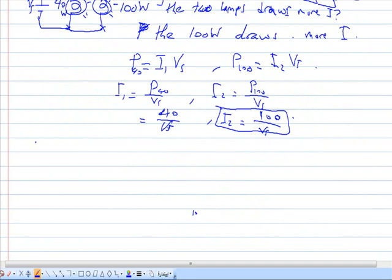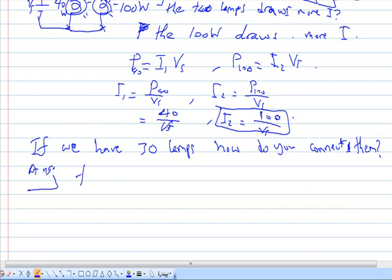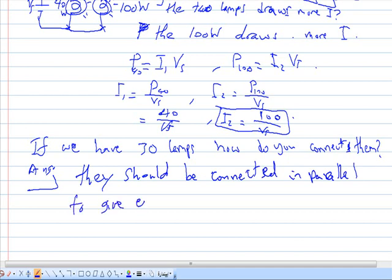They might ask you, if we have 30 lamps, how do you connect them? The answer is they should be connected in parallel to give each one the same voltage.